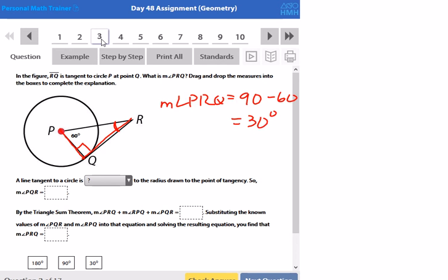And now let's see if we can use that to complete their explanation. A line tangent to a circle is perpendicular to the radius, that's what we said before, so PQR that's 90 degrees, that's the angle that's created with the radius and the tangent. So with triangle sum theorem if you add up all three angles that's going to be equal to 180. And substituting the known values into the equation and solving the resulting equation you find that PRQ, that's what we found is 30.